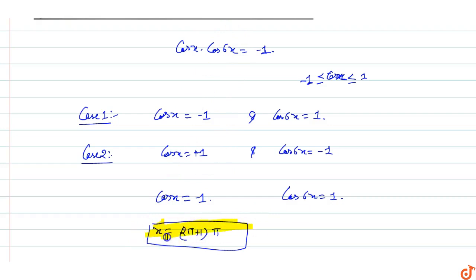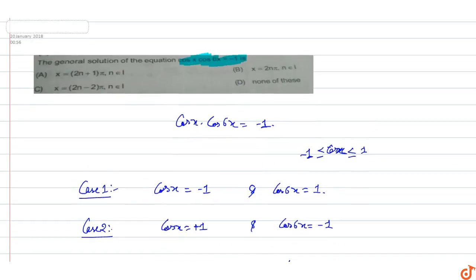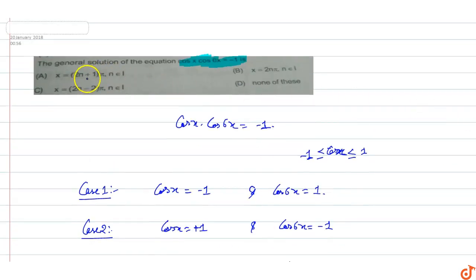cos x equals minus one and cos 6x equals one means x equals (2n+1)π, or multiples of π. All values of x equal to (2n+1)π where n belongs to integer values, so option A will be the correct option.